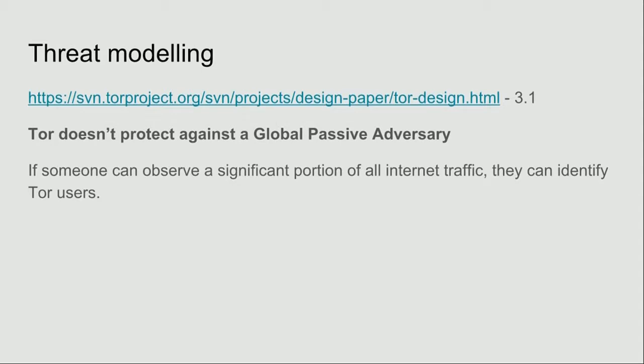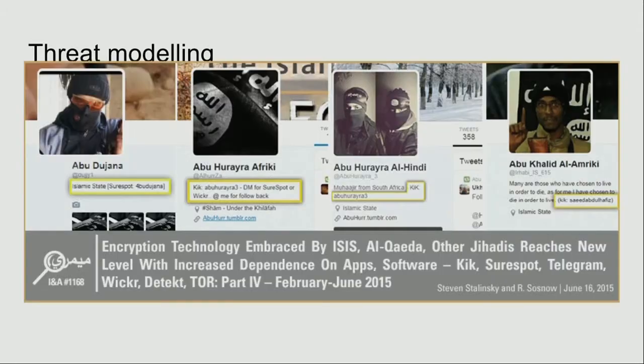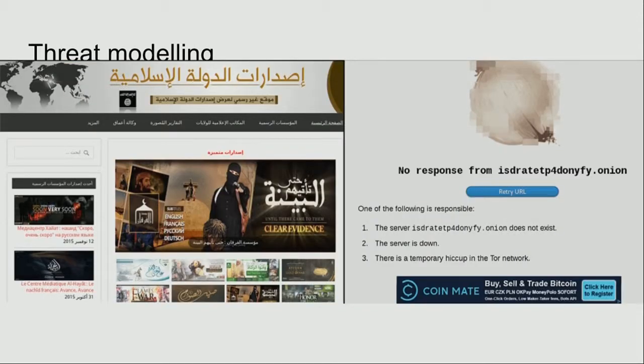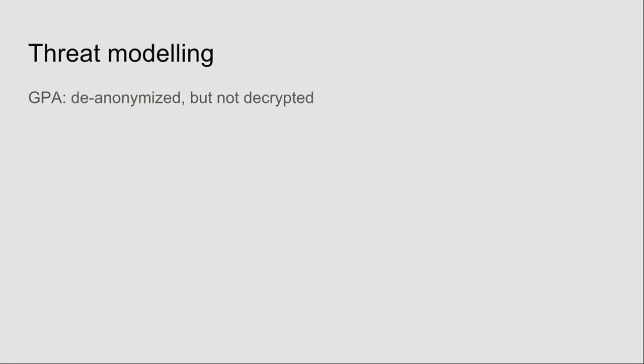Threat modeling — everyone's favorite topic. It's really important to understand the Tor threat model and how it does not protect you from a global passive adversary. If you are trying to hide yourself from the NSA or someone powerful like that — and the NSA is not a true global passive adversary, but they're pretty close — you're going to have a bad time. If a global passive adversary is attacking you and you are using Tor, you may be de-anonymized, but not necessarily decrypted. The threat model itself does not protect against a global passive adversary. So don't make an enemy of the NSA — it's not going to work out well.